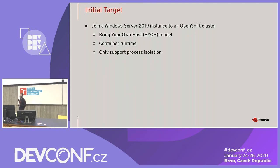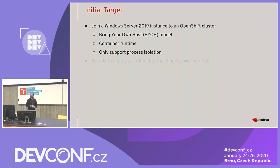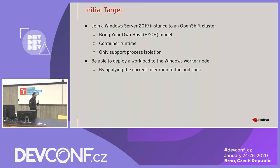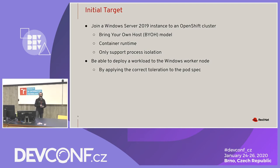To start things off, we decided to only support process isolation, because Hyper-V isolation requires virtualization support and nested virtualization in many clouds. Once the node is attached, we want to deploy a workload to the Windows worker node. To differentiate between nodes, we apply a taint to the Windows node. People who want to run a pod on that node specify in the pod spec that they tolerate this taint, so targeted scheduling happens on those Windows nodes only — avoiding a Linux workload accidentally landing on a Windows node.